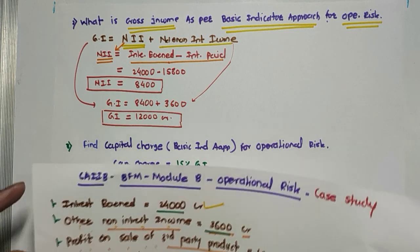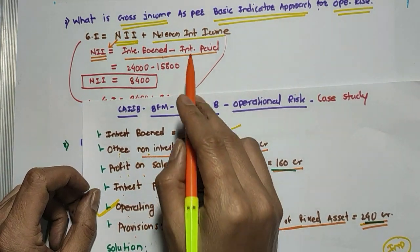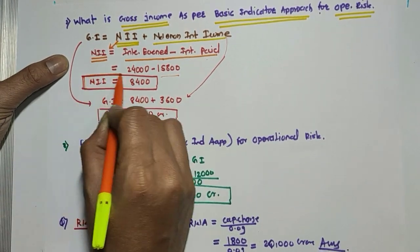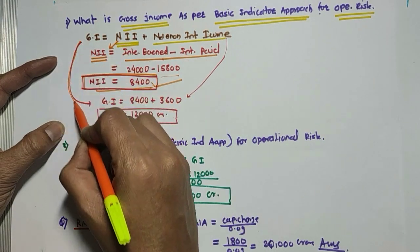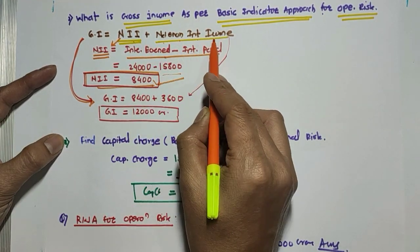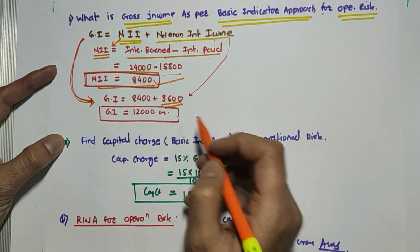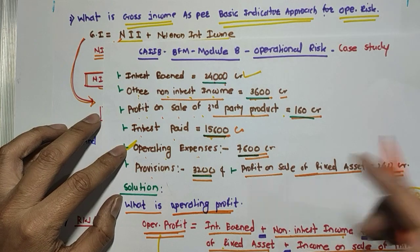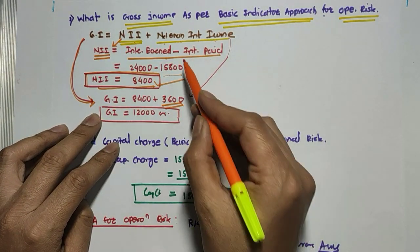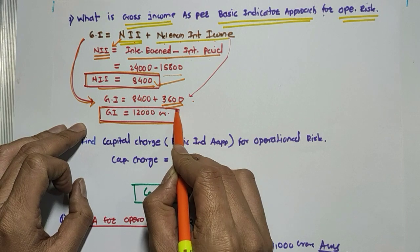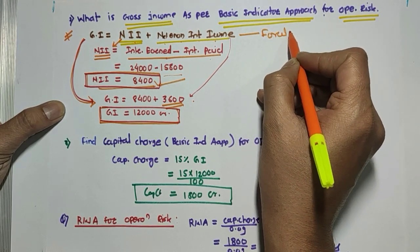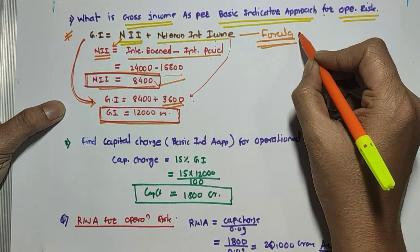They have given interest earned as 24,000 and interest paid as 15,600, so net interest income is 8,400. The gross income will be net interest income plus net non-interest income. Net non-interest income is directly given as 3,600 CR. So, gross income = 8,400 + 3,600 = 12,000 crores. Remember the formula for gross income by the Basic Indicator Approach.